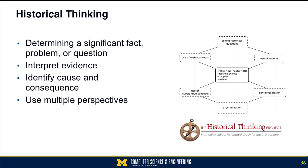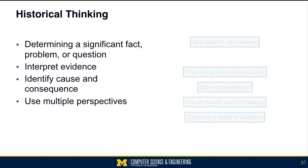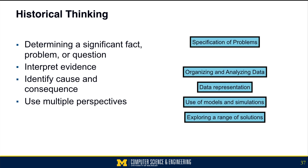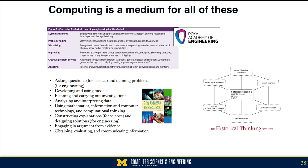It turns out there's also such a thing as historical thinking — how do people think about historical situations and analyze them? If we consider historical thinking, we see similar elements: it's about specifying problems, organizing and analyzing data, and doing data representation. The argument I'm making is that computing is a medium for all of these. If we can teach computational thinking, because a computer can be anything else, we can also teach engineering thinking, scientific thinking, and historical thinking.